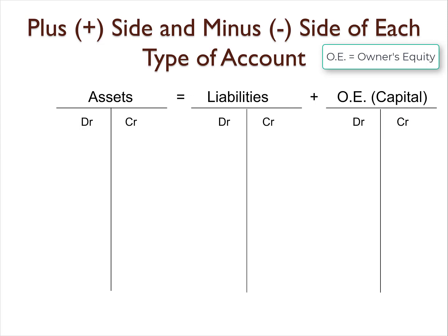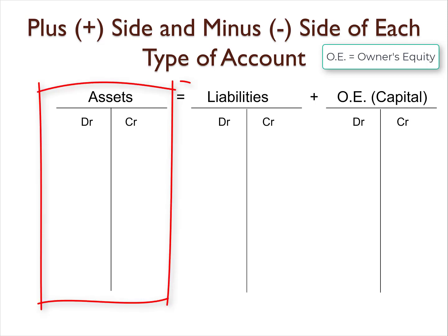Now we need to figure out which side is the increase and decrease side of each account. Notice on the left side of the equal sign is assets. We'll focus on assets first. Because assets are on the left side of the accounting equation, all assets increase on the left side — the debit side. This means assets decrease on the right side, the credit side.